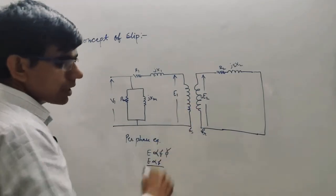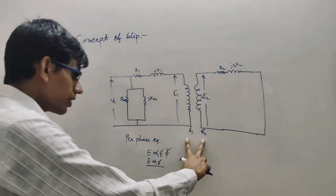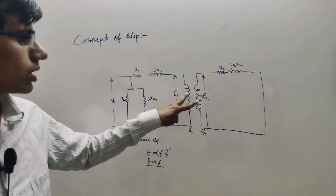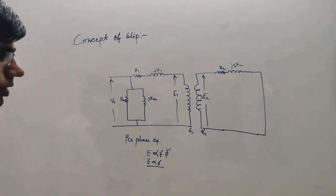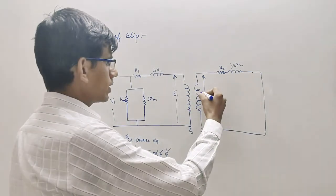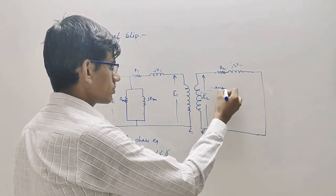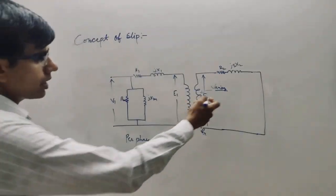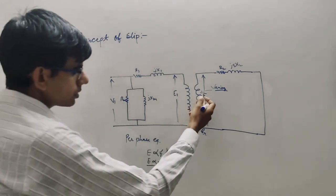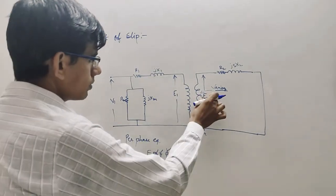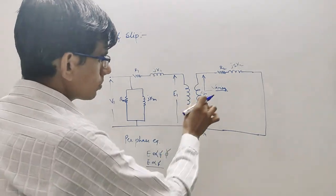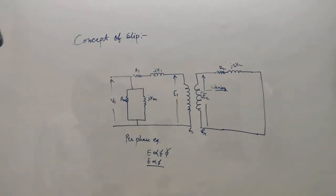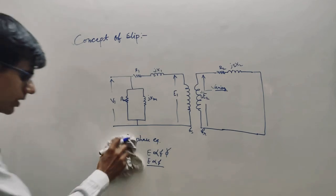Now, referring the rotor circuit to the stator is not straightforward because S is varying. Normally we refer using N1/N2, since the ratio E1/E2 equals N1/N2. But when S itself is varying, this ratio changes. So the problem is: how do we handle a varying EMF? If slip is 0.03 or 0.05, the ratio will be different in each case.